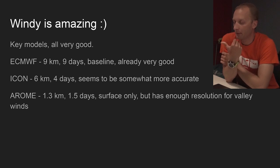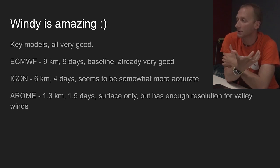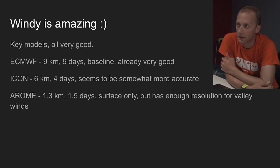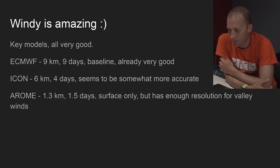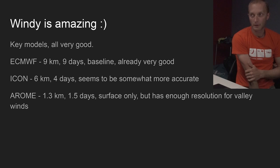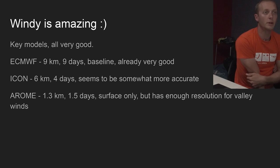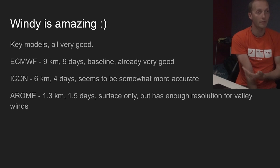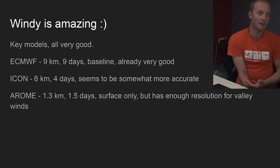Let's talk about the models. ECMWF is a 9 km grid, nine days out — so you can look quite far ahead. Icon is 6 km, four days out, and tends to be somewhat more accurate. One warning for winds: neither ECMWF nor Icon have enough resolution to capture valley winds. So if you care about valley winds, Cosmo is the better option. If you want to stay in Windy, the Arome model — a surface-only model — will have the valley winds. It's only one and a half days out, so it's only useful the day before, and it only has surface winds so there's only one setting.